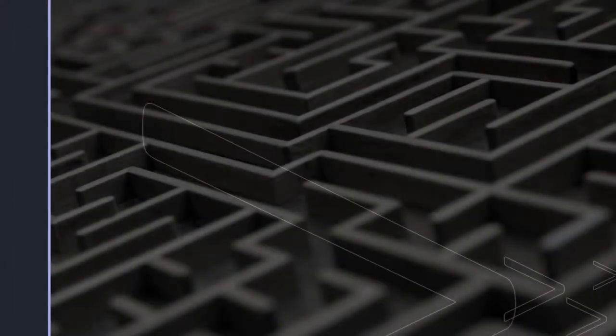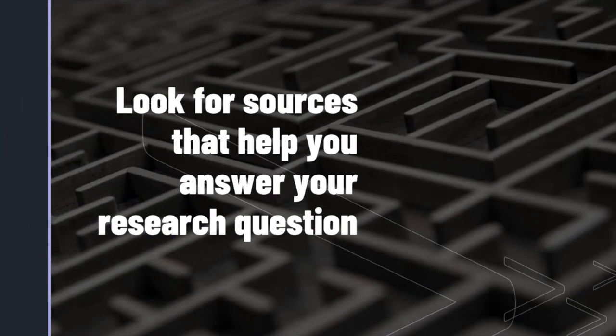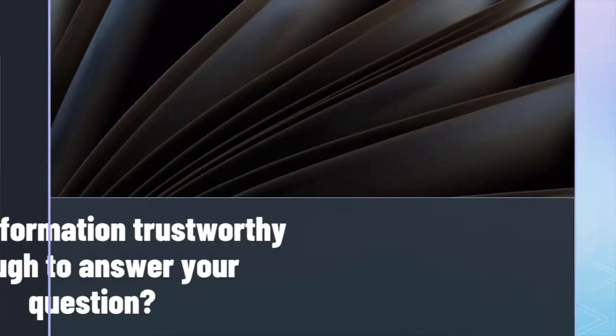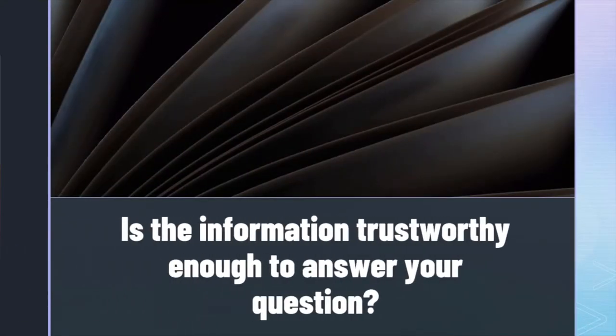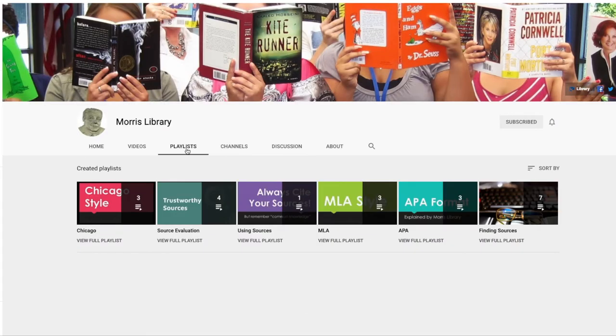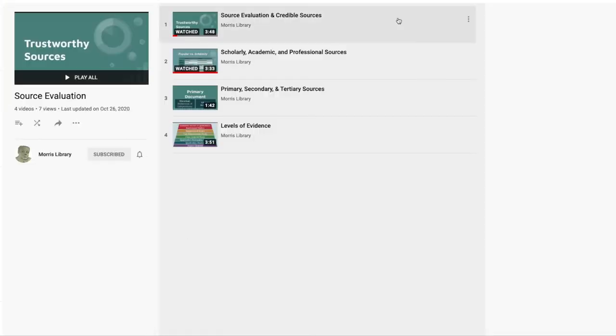As you research, you're looking for sources that help you answer your question in some way. And if we're building our answer on our sources, we want to be sure the information in those sources is trustworthy. Ask yourself when you're reading why this source should be trusted — essentially, why will this source be part of what you base your answer on? We have another video going in depth on how to determine whether a source is trustworthy if you need tips for what information to consider.